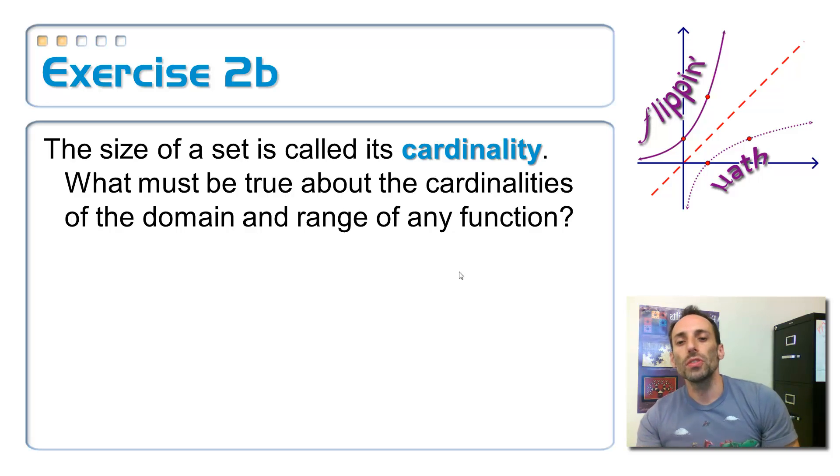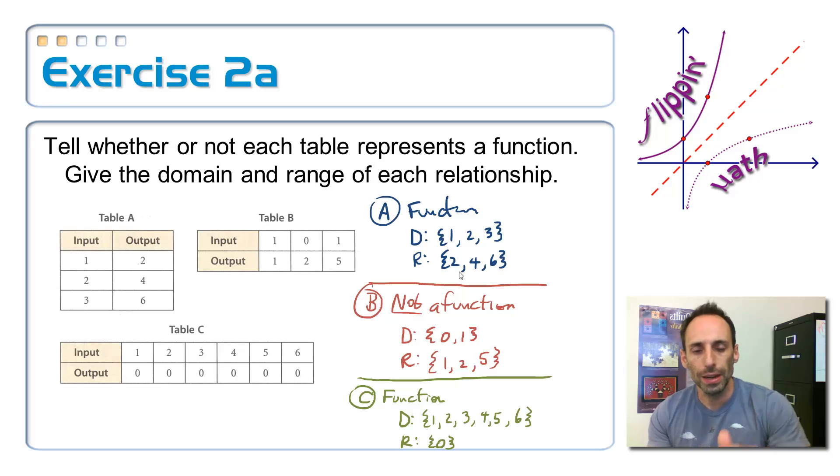Second part of it. What must be true about the cardinalities of the domain and the range of any function? Well, that's pretty tough to answer without having any examples or whatever. So, let's look back at these examples and see if we can come up with something. Let's look at table A. It was a function, and how many things were in the domain? There were three of them. And in the range, there were also three of them. So, both of those, the cardinality was three.